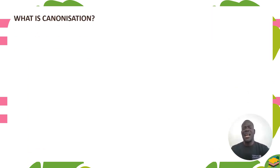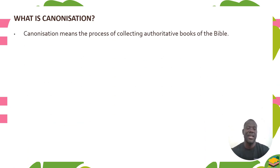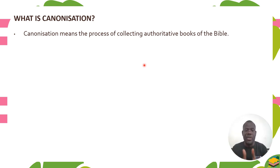What is canonization? Canonization means the process of collecting authoritative books of the Bible — the collection of different books such as Jeremiah, Isaiah, Psalms, and Joshua — putting them together into one collection. That is what is called canonization.